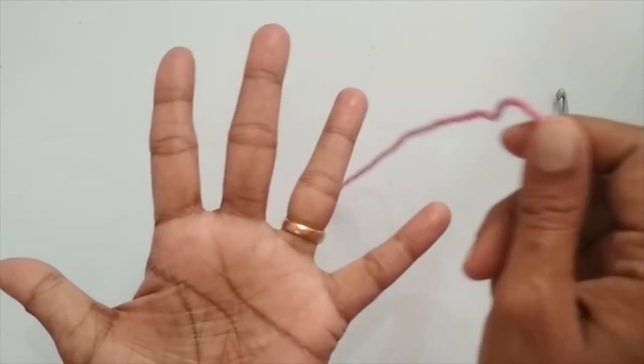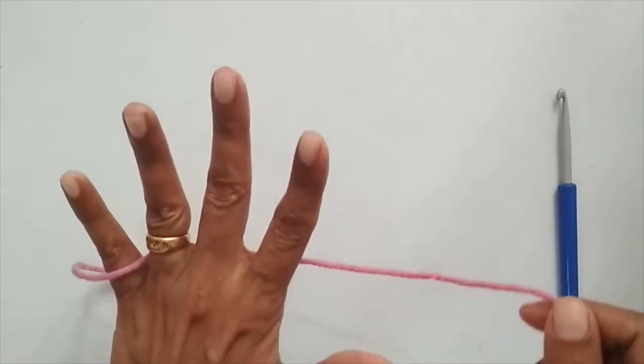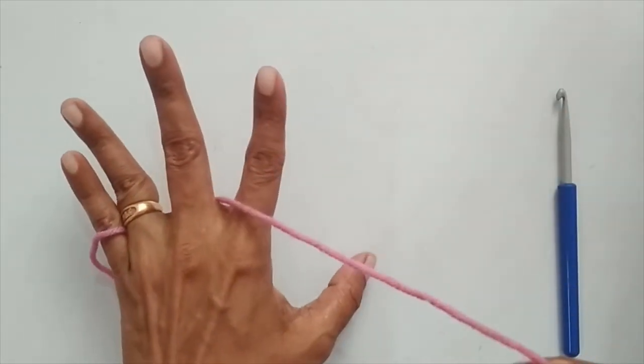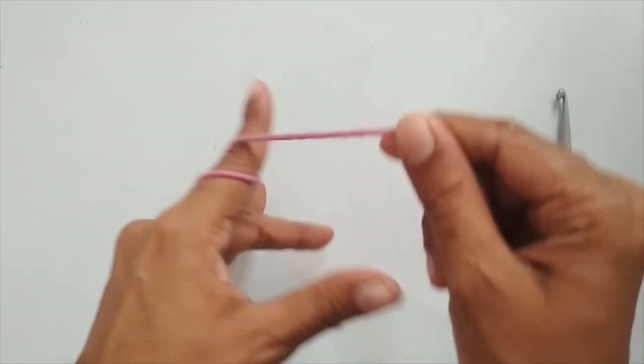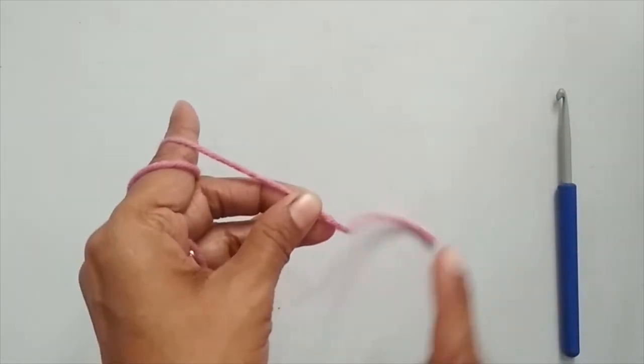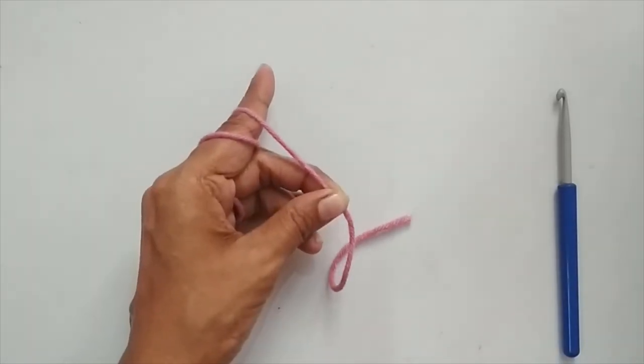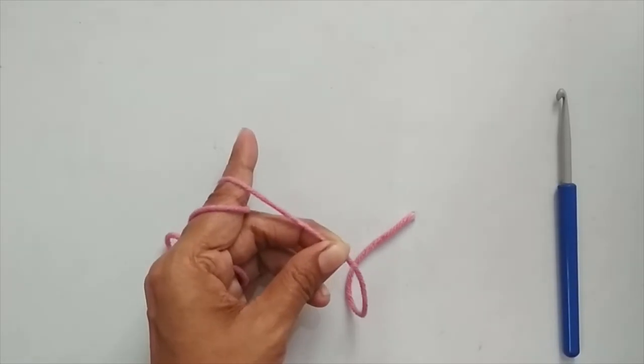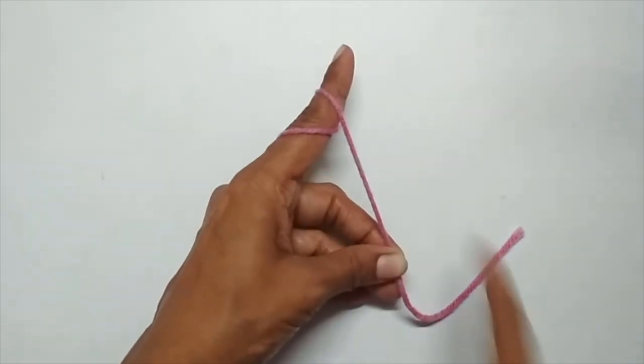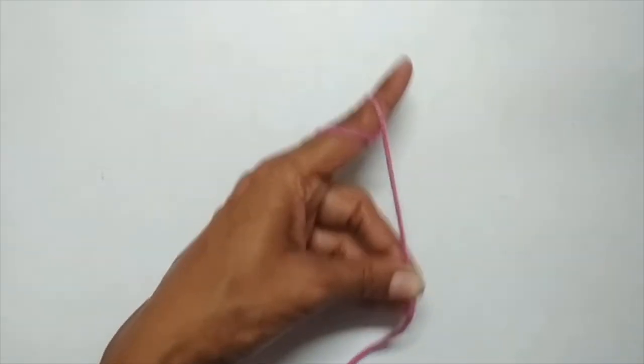Now I'll take my yarn and go through my pinky finger, turn my hands like this, and take the yarn over my pointing finger and loop it once. Come here and hold the yarn with my thumb and my middle finger. So this is how I like to hold my yarn. If you see here, this area is called the workspace, or this area provides you the tension.